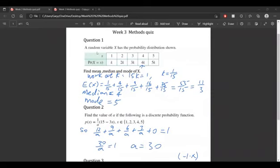First, it tells us the random variable X has the following probability distribution. Before we find the mean, median, and mode, we should find out what k is. We know that the probabilities sum to one when added, so 15k in total equals one, which means k equals one over 15.